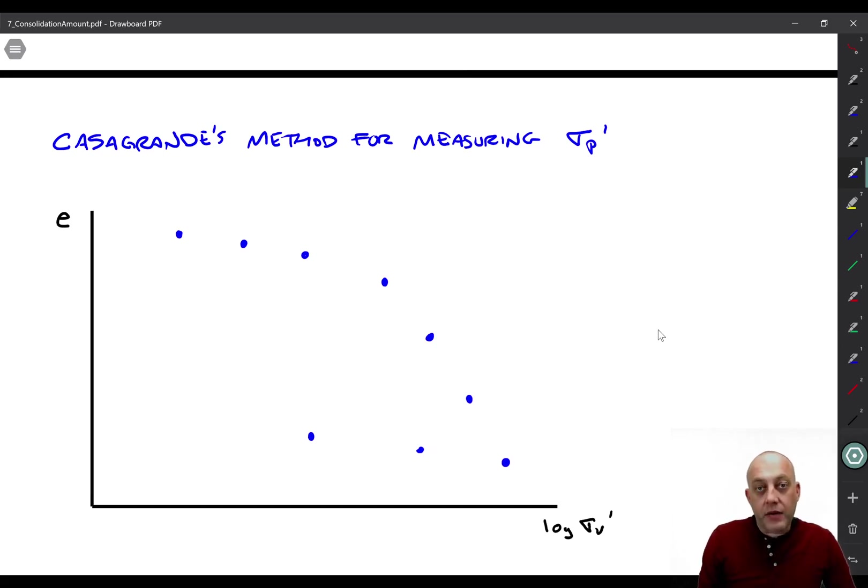Alright, what we'll look at now is Casagrande's method for measuring sigma p prime from a laboratory consolidation test. In an ideal world, we would have an elastic loading period, and then we would turn a very sharp corner and reach an elastic plastic loading period. So we would transition from going along the C sub R line to the C sub C line.